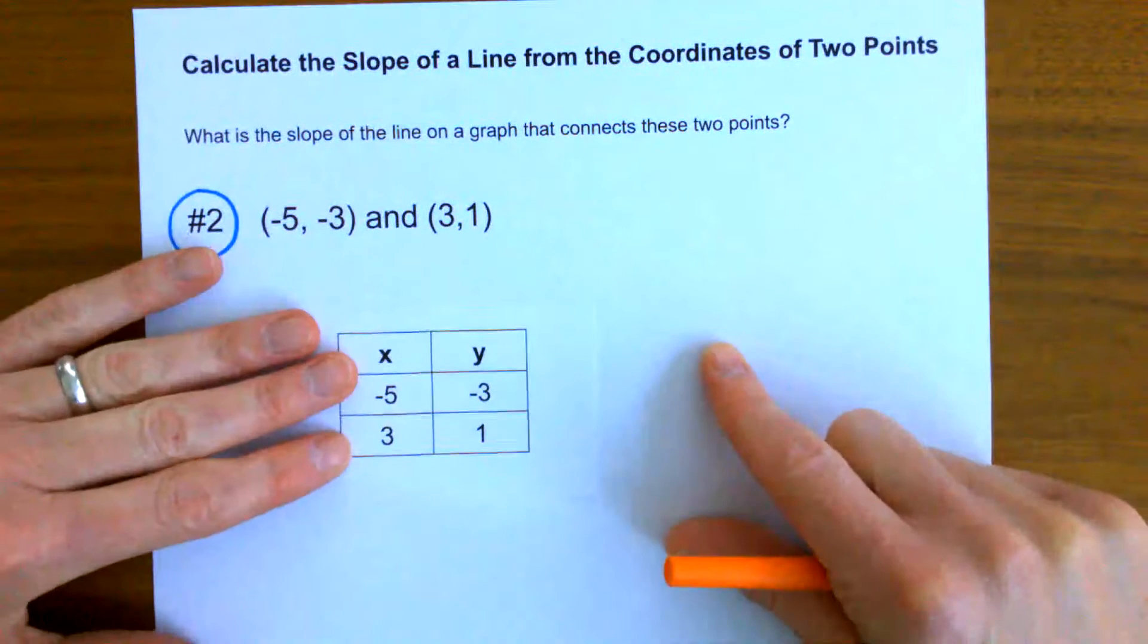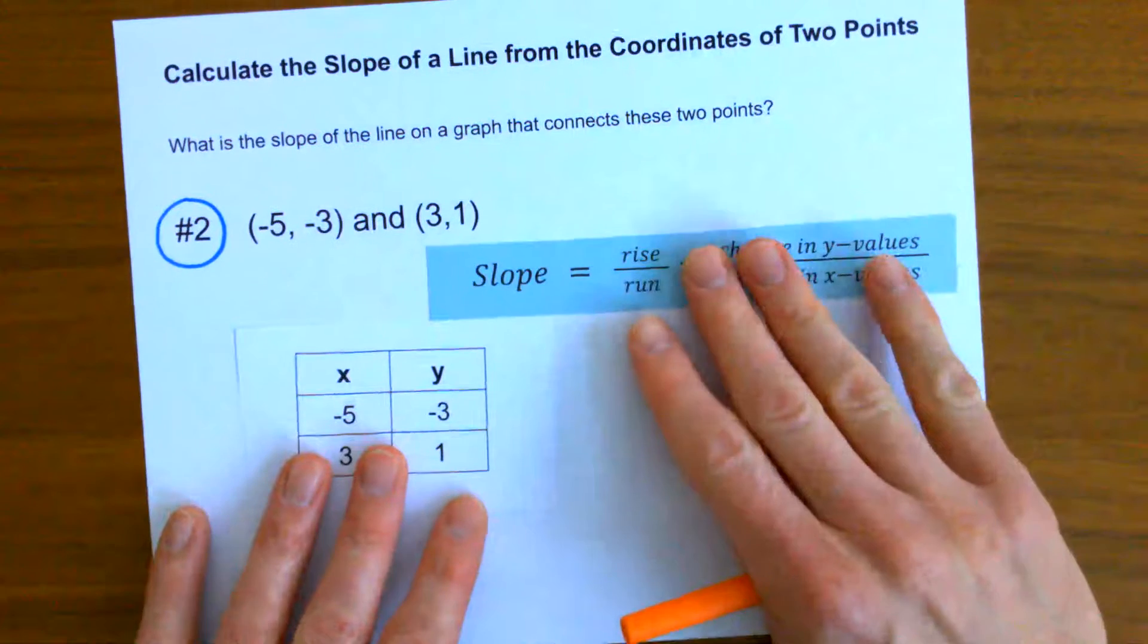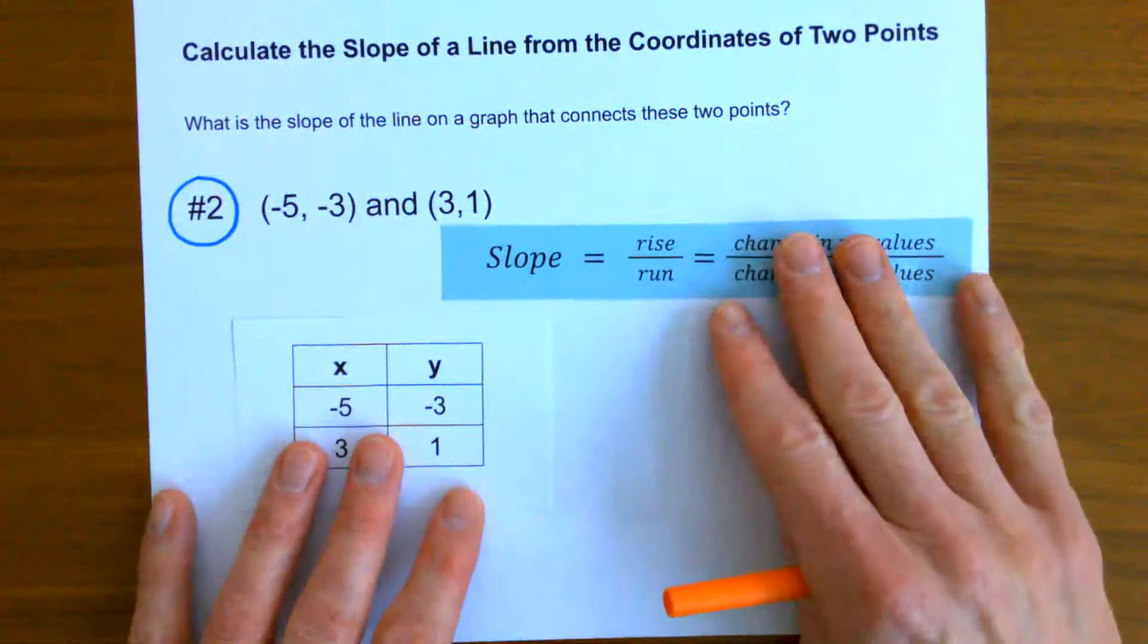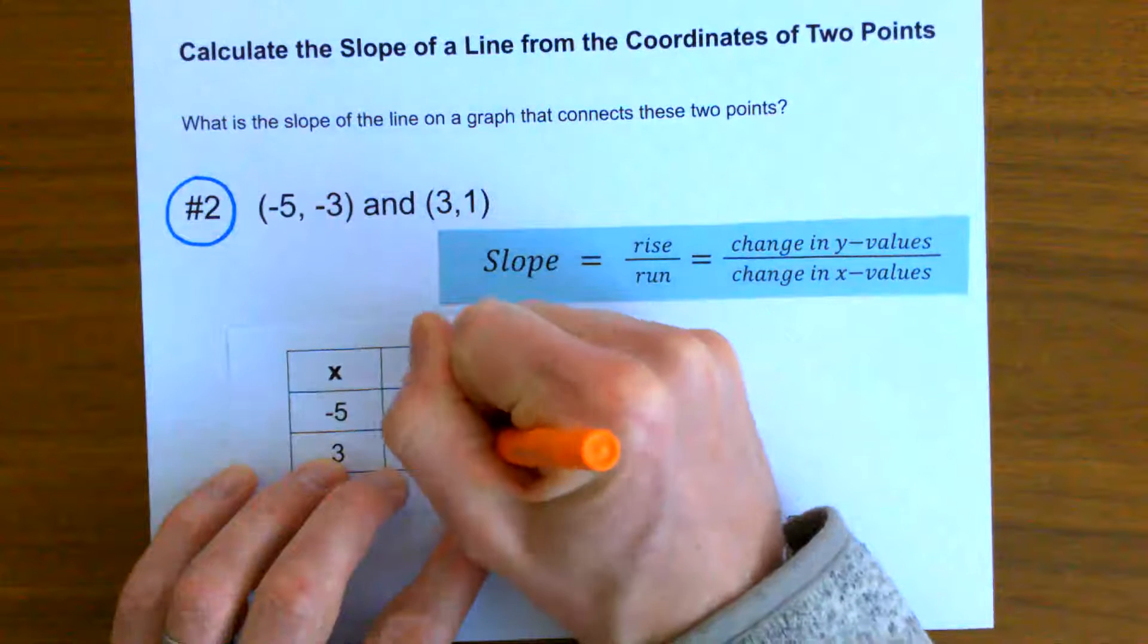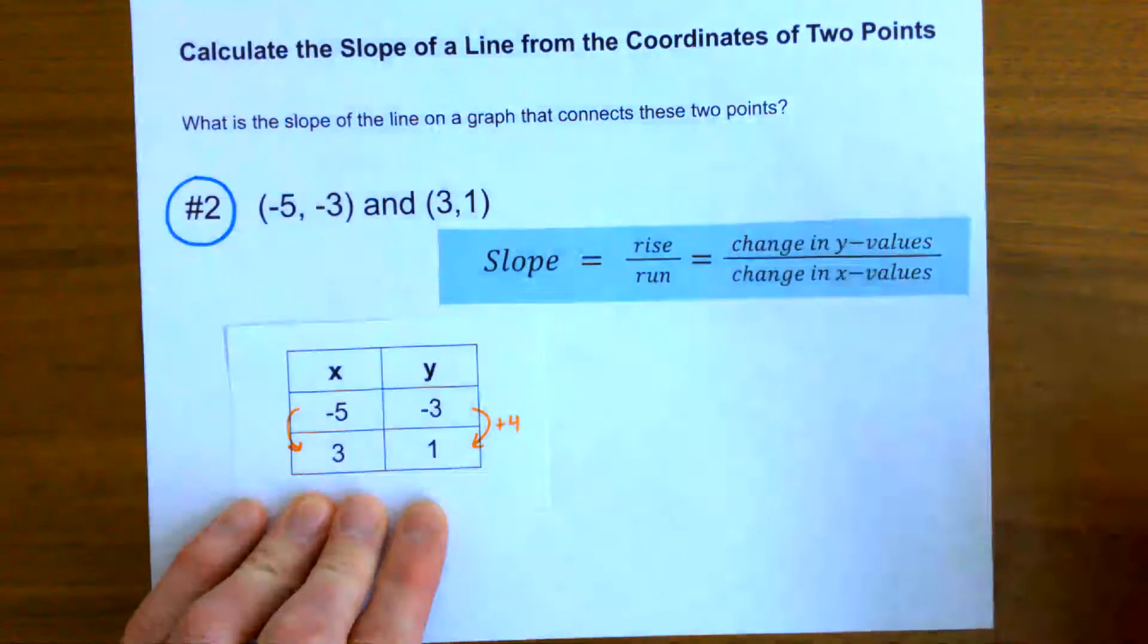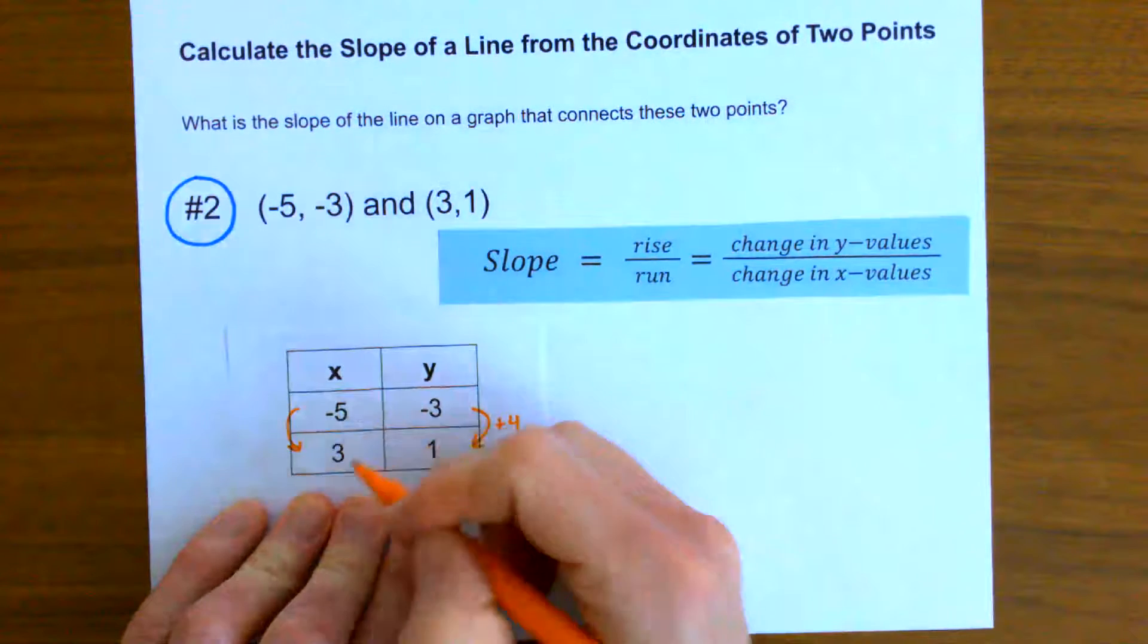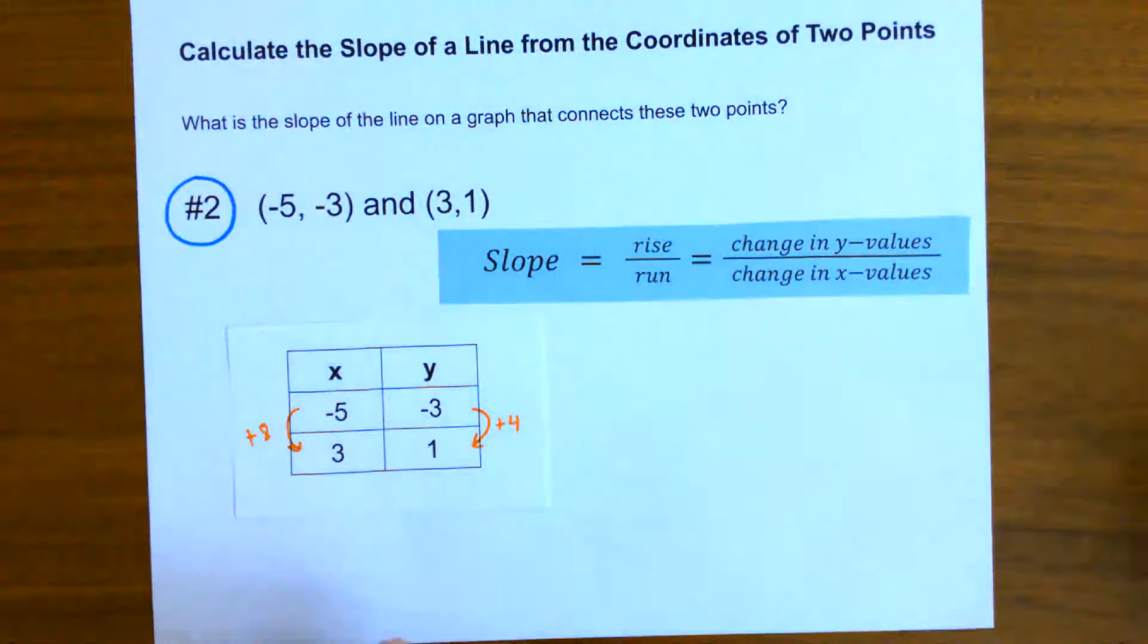All right, well if I make a data table, here's the data table again. I'm trying to get the rise over run, or the change in the y divided by the change in the x. And here I can see that my y values are increasing by four. My x values are going from negative five to three, they're increasing by eight.